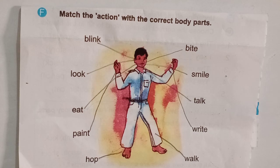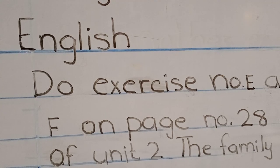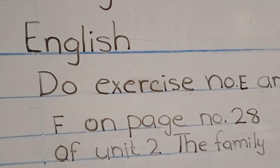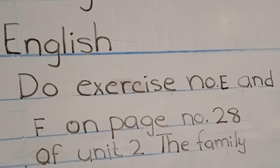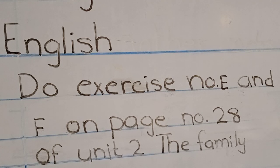I hope children you understand how to match actions with the correct body parts. You will do this work at home with the guidance of your parents. Now children, take out your diaries and write: do exercise E and F on page number 28 of unit 2, the family. You will do both exercises at home with the guidance of your parents. Thank you. Take care and Allah Hafiz.